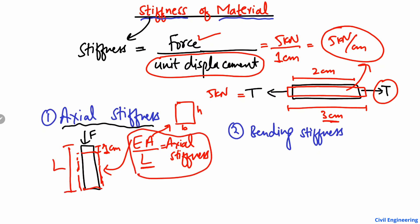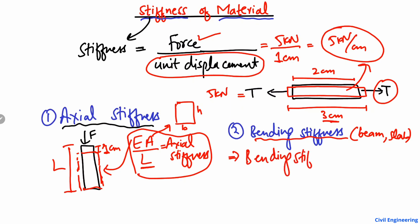The second type is bending stiffness, which applies to beams, slabs, and flexural members that are subjected to bending. In this case, stiffness is defined as the moment required to produce a unit rotation — this is known as the bending stiffness. Bending stiffness can be found using the formula: EI divided by L.